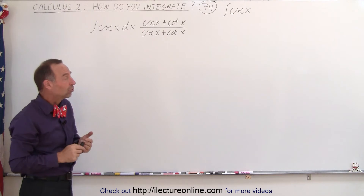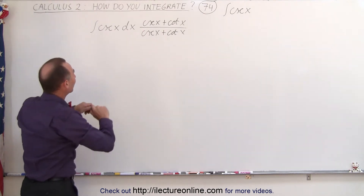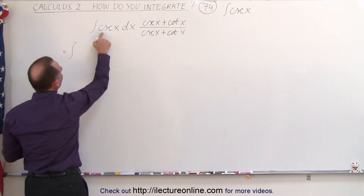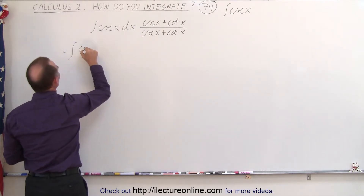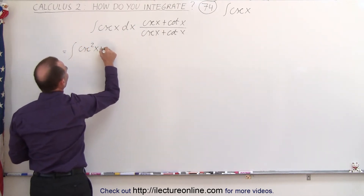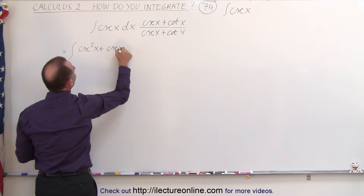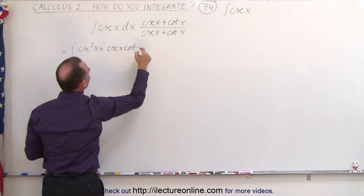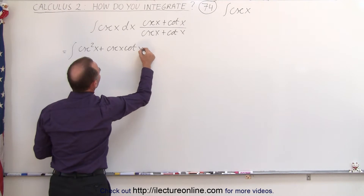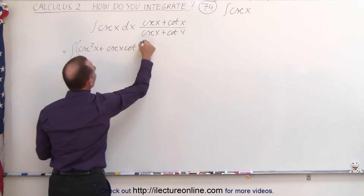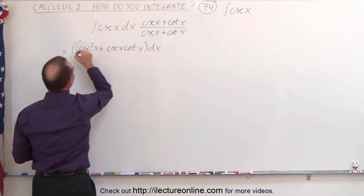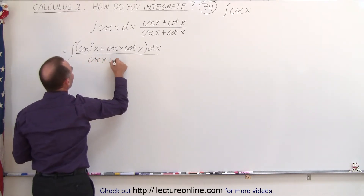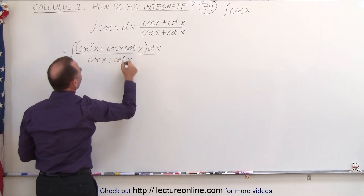So when we now multiply this through, we'll get the following integrand. This now becomes equal to — multiplying this times that — we get the cosecant squared of x plus the cosecant of x times the cotangent of x. We still have a dx.